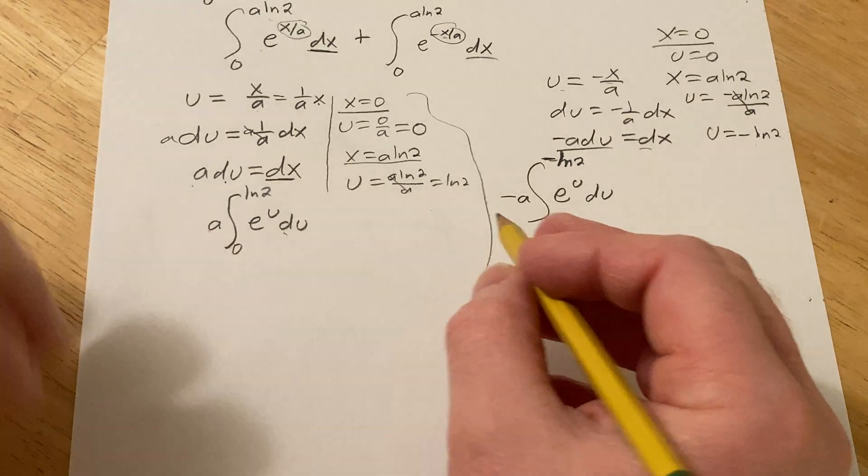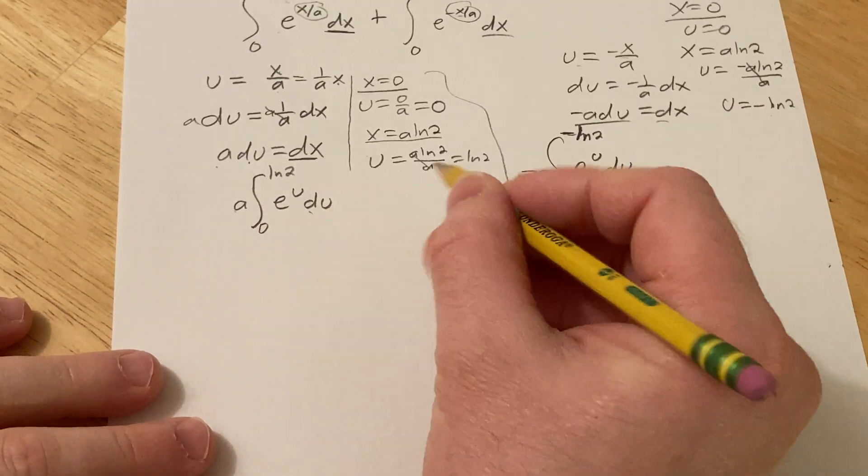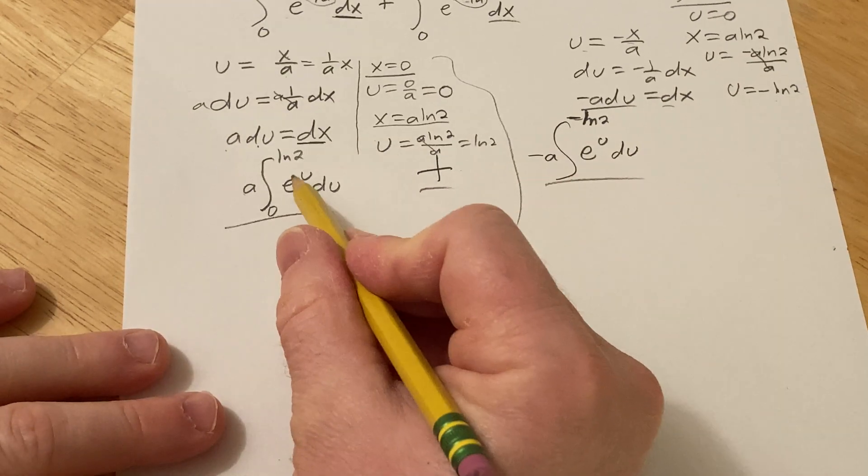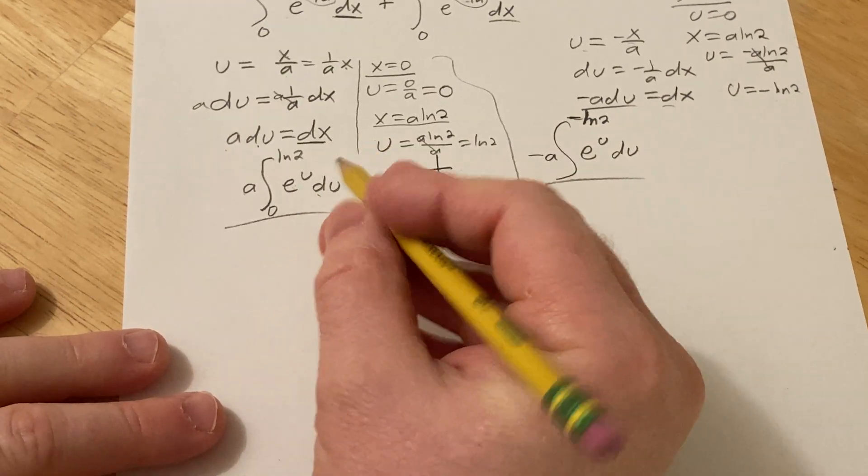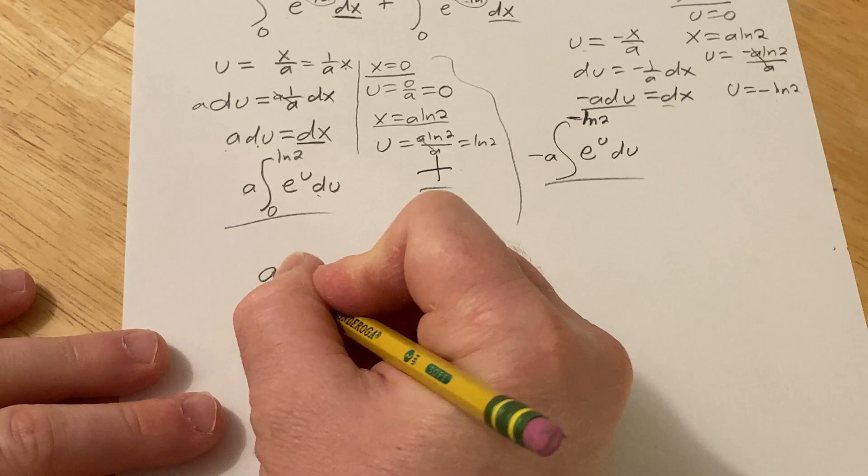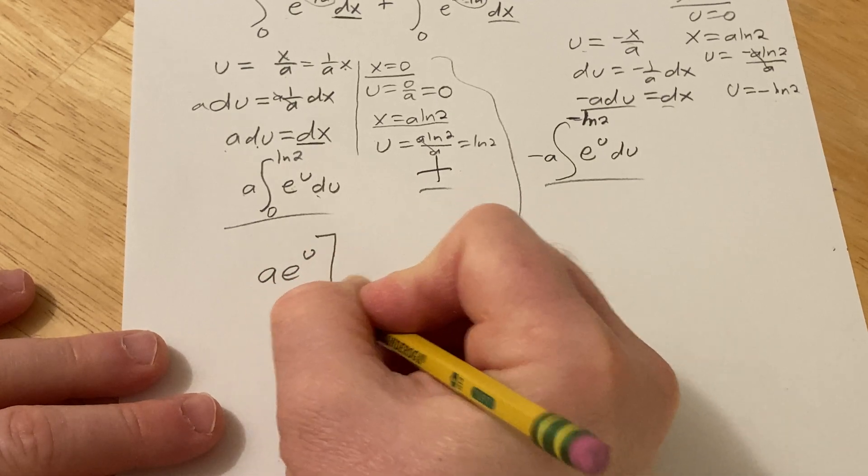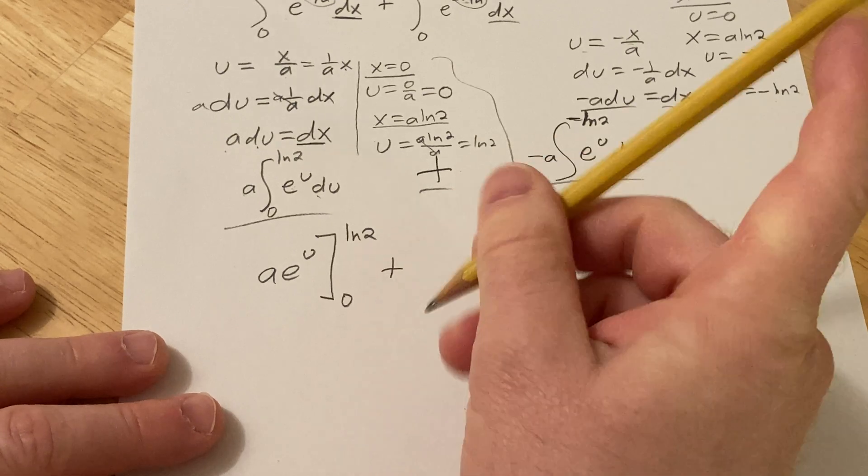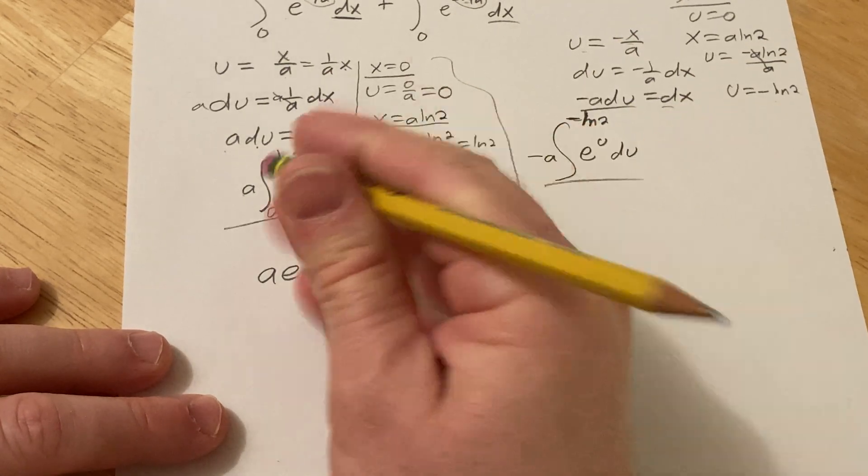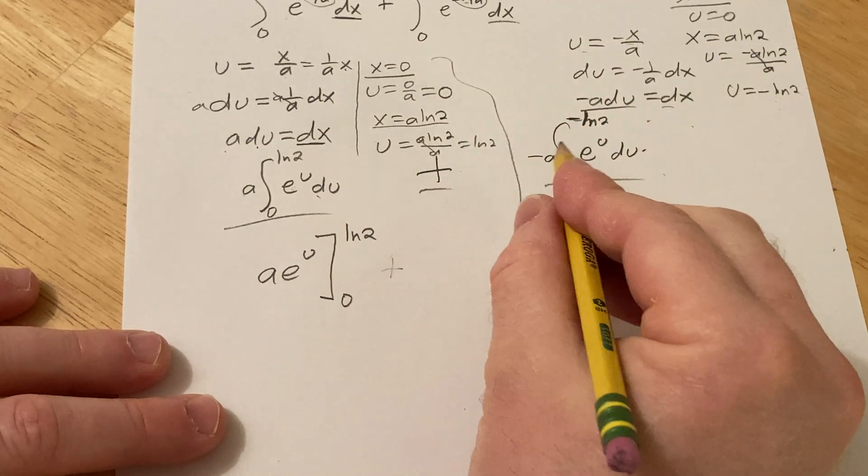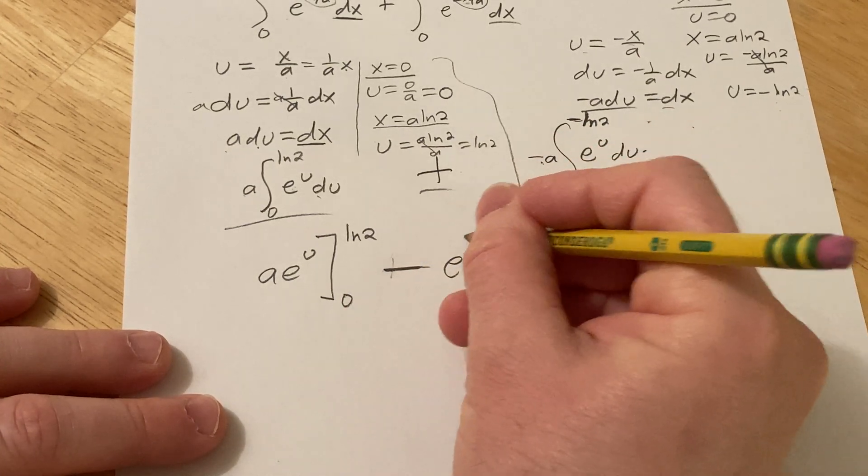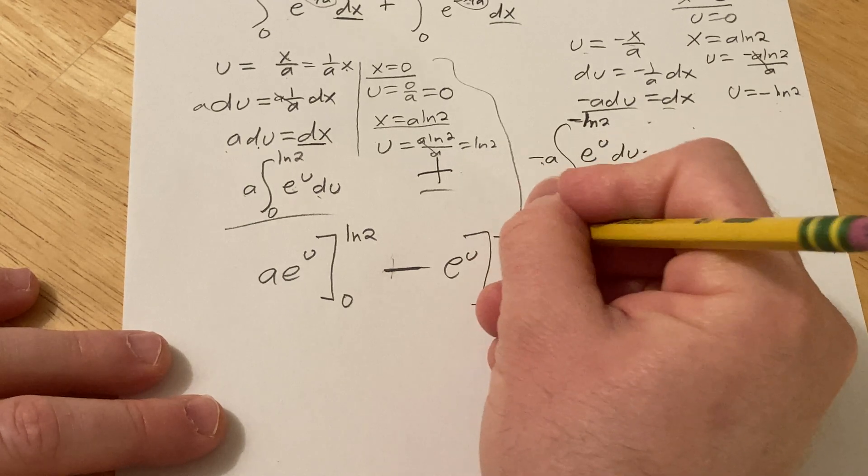All right, we're adding both of these up. When you integrate this, you just get e to the u, so it's a e to the u from 0 to ln2, plus, or rather minus because there's a minus here, minus e to the u from 0 to negative ln2.